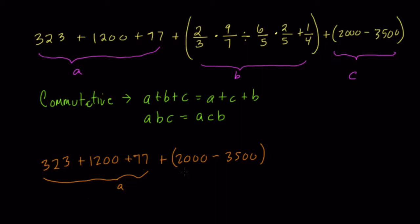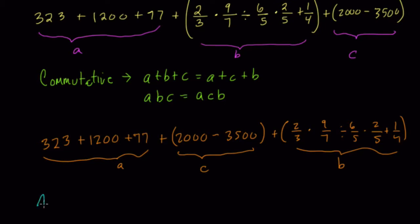And then the B term, I'll write it again, 2 thirds times 9 sevenths divided by 6 fifths times 2 fifths and plus 1 fourth. That's term B. We'll get back to that one. Now here, I want to add A and C before I add them to B. So this property that I need to use right here is the associative property. Now the associative property of addition or multiplication tells us that we can add terms A plus B plus C and add A and B first, let's say, and then add C, or some other permutation.